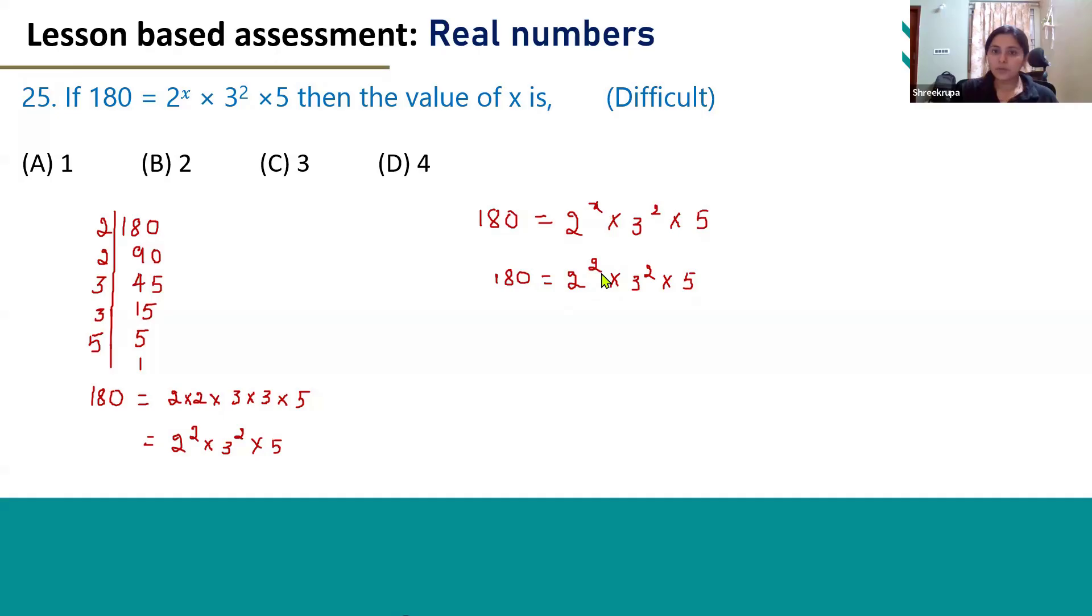Here, because in the place of 2^x we can see the number 2. So we have to compare these two, only then we will get the value of x, that is x = 2. So the correct answer is option B, 2.